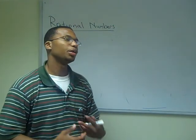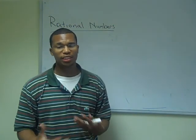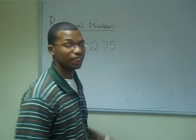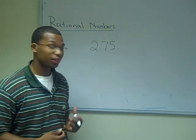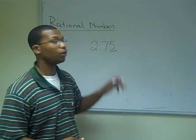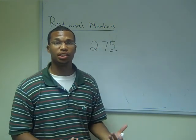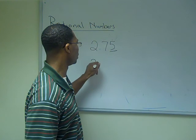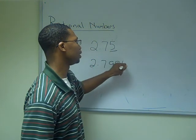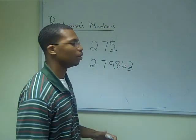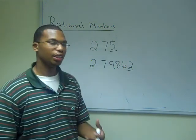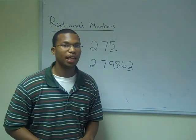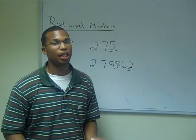Rational numbers have either a terminating number or a terminating group of numbers. For example, if I had a number 2.75, well this has a terminating number. The terminating number would be five, or the terminating digit at which it ends. Another example would be 2.798622. Well in this number the terminating digit or the ending digit would be 2. So therefore this is a rational number. Now let me give you an example of a number that can go on to infinity but still be a rational number.